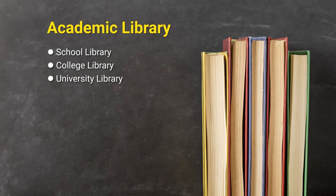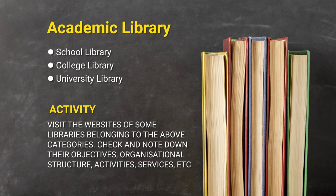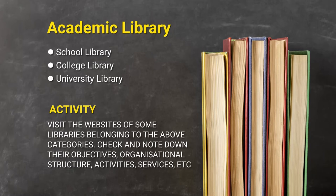Academic library starts with a school library, going on to college library and further to the university library. You can visit the websites of some academic libraries — most libraries maintain their websites and make their services available outside the library. Try to visit websites of some academic libraries and note down their objectives, organizational structure, activities, and services. This activity will help you know these things realistically and appreciate how these libraries work.